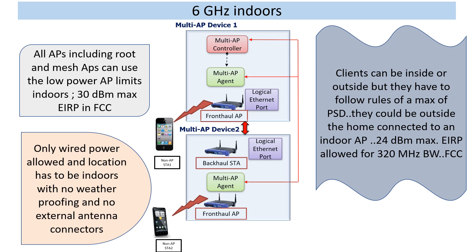Quick recap: most of our current implementations worldwide are 6 GHz indoors. Some countries have different rules and regulations. Just picking on FCC in the US, being such a dominant regulator and a dominant market — indoor APs have been out in the market, the Wi-Fi 6E certification is up and running. It limits the powers of the APs, but it also limits the power of the client, with a maximum EIRP along with a strict power spectral density.